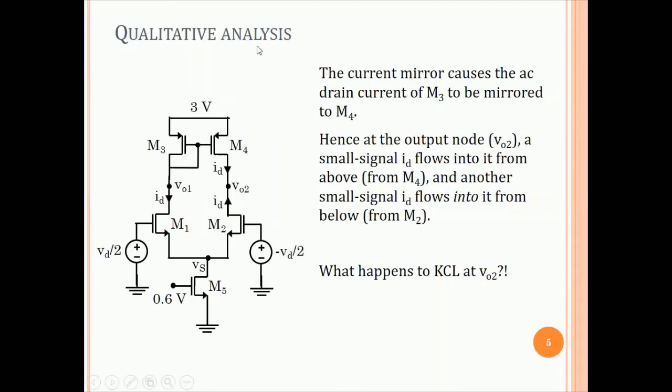Before doing the small signal circuit, let us do a quick qualitative analysis for a differential input voltage. Like we had discussed last time for the current source load, if this is VD by 2 and this is minus VD by 2, we say, let us assume that that causes a small signal current ID here, then a minus VD by 2 will cause a small signal current ID that flows up. This is flowing down, this flows up, which is basically minus ID.